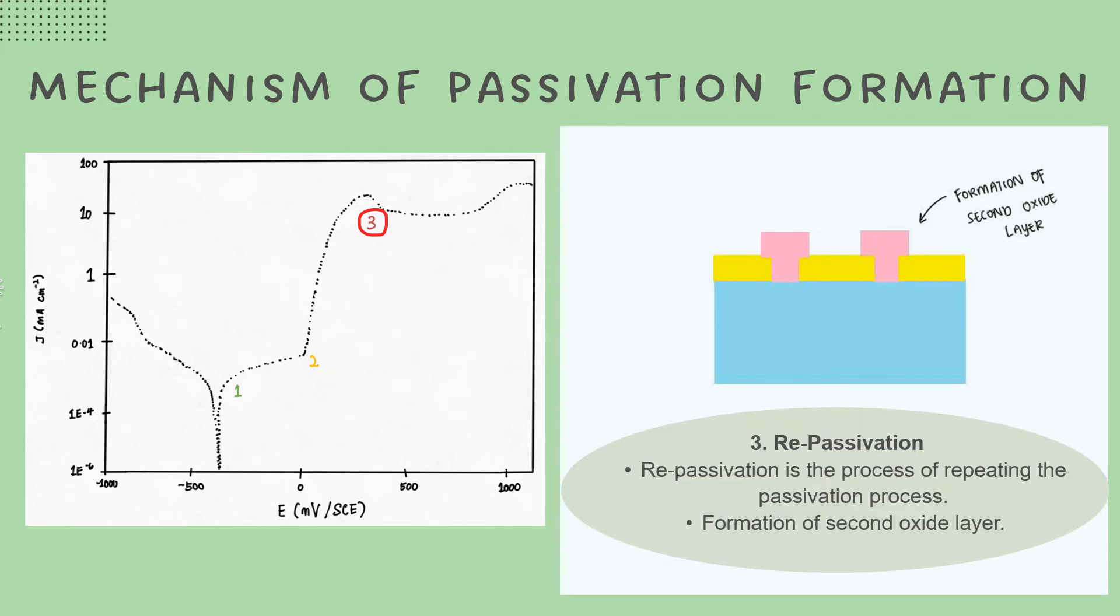The passivation process comes to an end when the oxide layer has completely covered the material. Passivation will not occur again under this condition, even if the voltage continues to rise. This is due to the oxygen evolution that takes place.